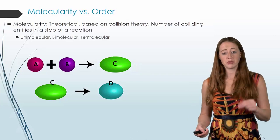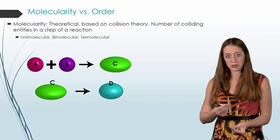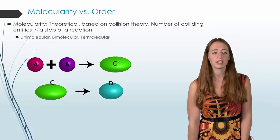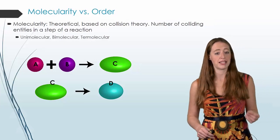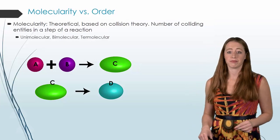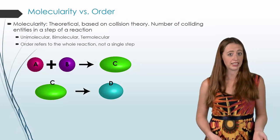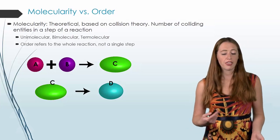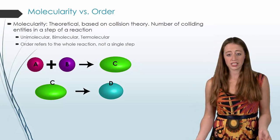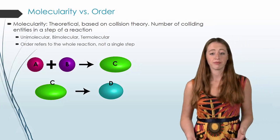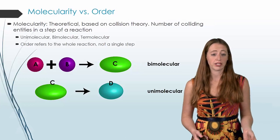So here I have a two step reaction. It's effectively A plus B goes to D when you look at the overall reaction. But we have two different steps. Our first step has A plus B going to C. That has two entities, and so it is bimolecular. The second step has that intermediate C reacting on its own to form D. And so it's just one entity. And therefore, it is unimolecular.